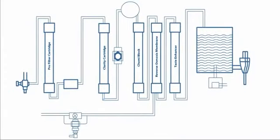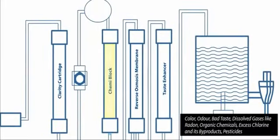Then the water goes to the chemi block. This cartridge removes color, odor, bad taste, dissolved gases like radon, organic chemicals, excess chlorine and its by-products, and pesticides.